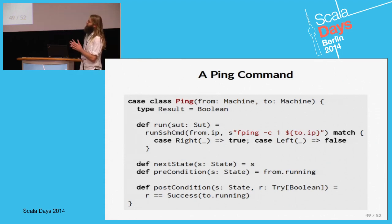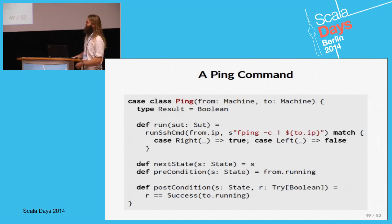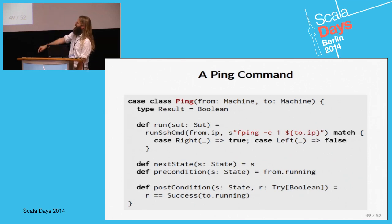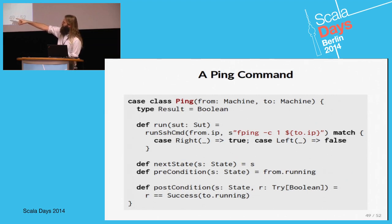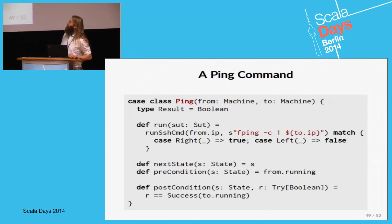We have a ping command that runs SSH to the source machine and on that machine runs ping to the target machine. So a ping command goes from one machine to another, and the post-condition is that the command should succeed if the target machine is running, otherwise it should fail. The precondition is that the source machine must be running.